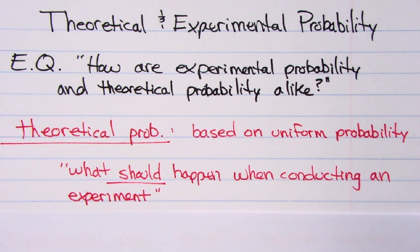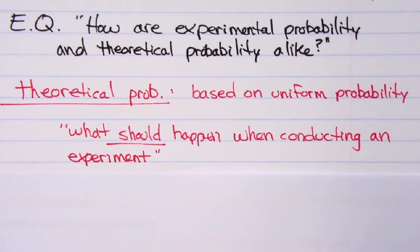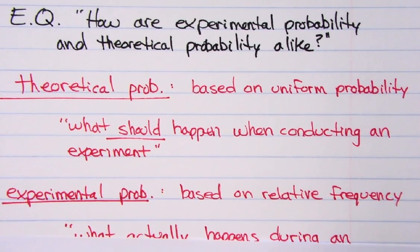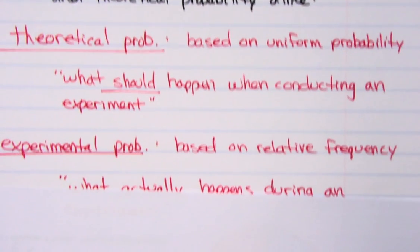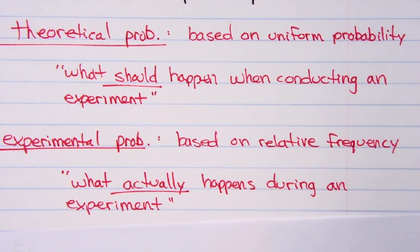Theoretically, you might have heard this, theoretically this should happen. And then experimental probability, based on the relative frequency, means what actually happens during an experiment.